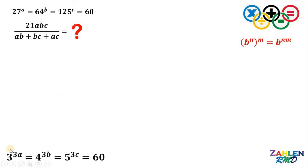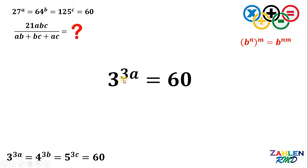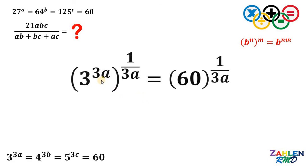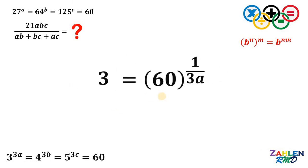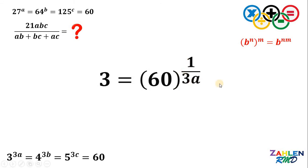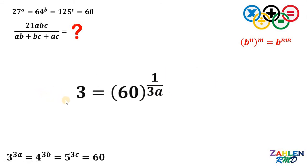From here, let's take 3 raised to 3A and 60, because we know they are equal. What we're going to do is eliminate this exponent 3A. To do that, let's raise both sides by 1 over 3A. We have 3A times 1 over 3A, which becomes 1. Therefore, the left-hand side becomes 3, and it is equal to 60 raised to 1 over 3A. Let's set aside this result.